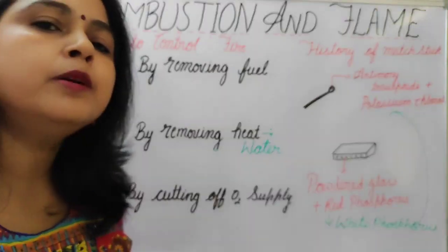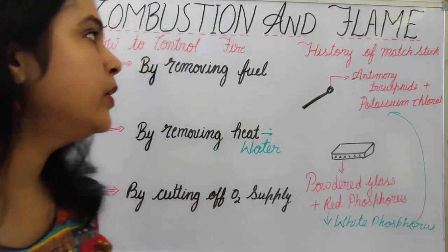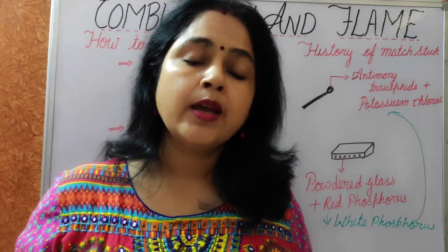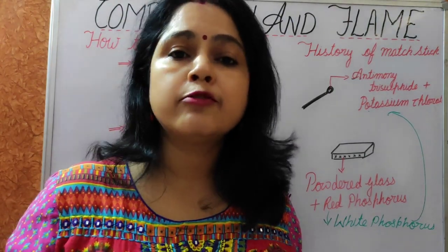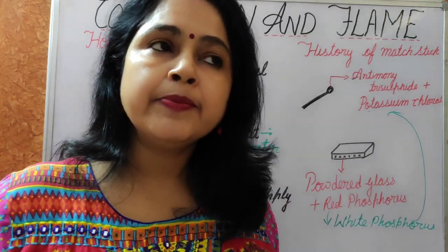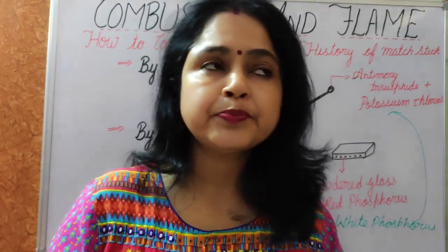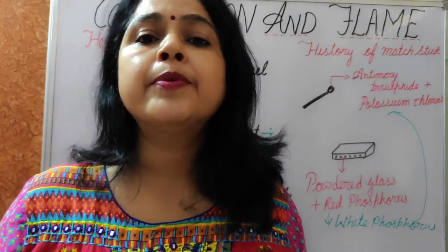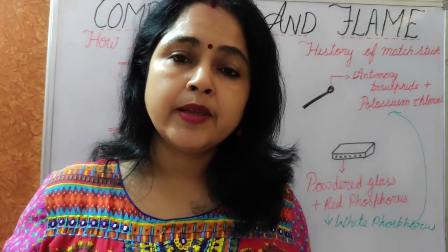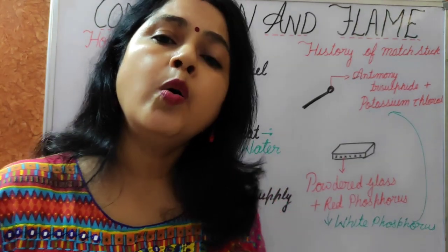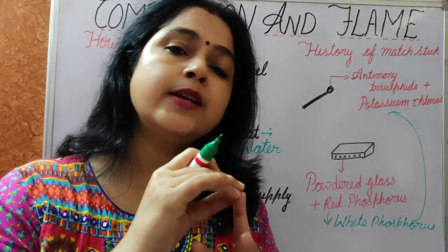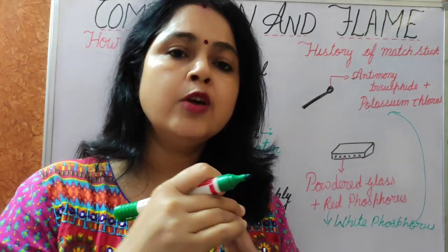This is the working of the modern match. Now we are going to discuss how to control fire. Fire is our friend also and our enemy also. In the kitchen we use fire to cook food, in factories we use fire to heat things, and it is also used in thermal power plants. But when fire breaks out in any building or factory, it becomes a great disaster. To control fire, three things are required: fuel, oxygen, and ignition temperature.